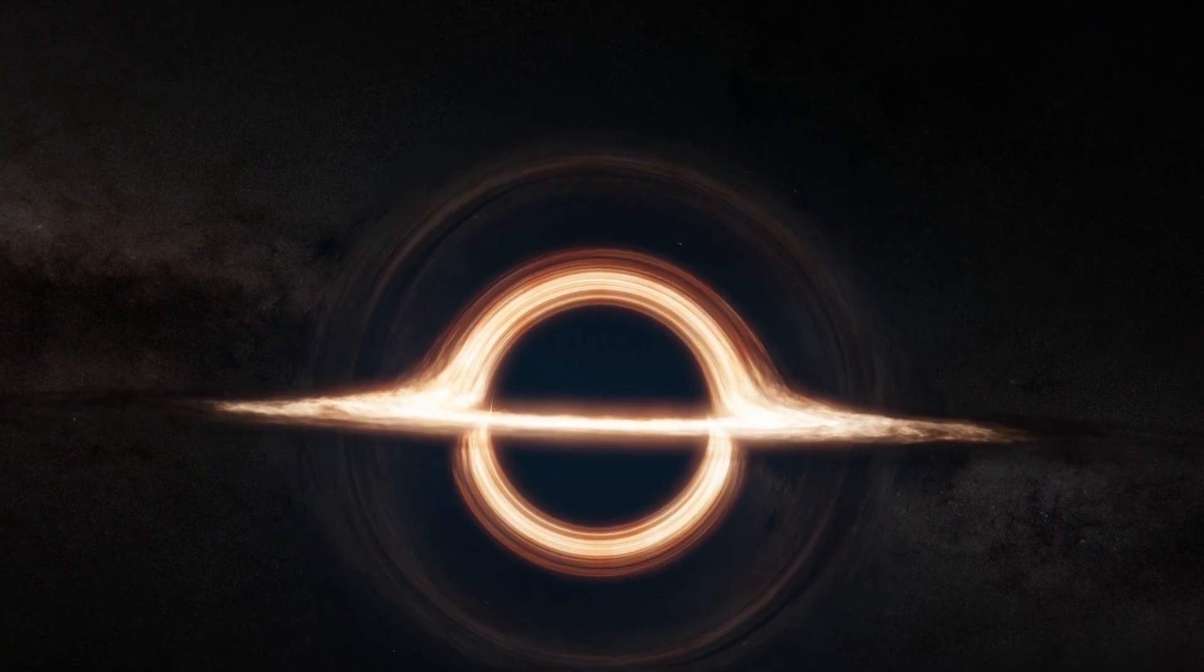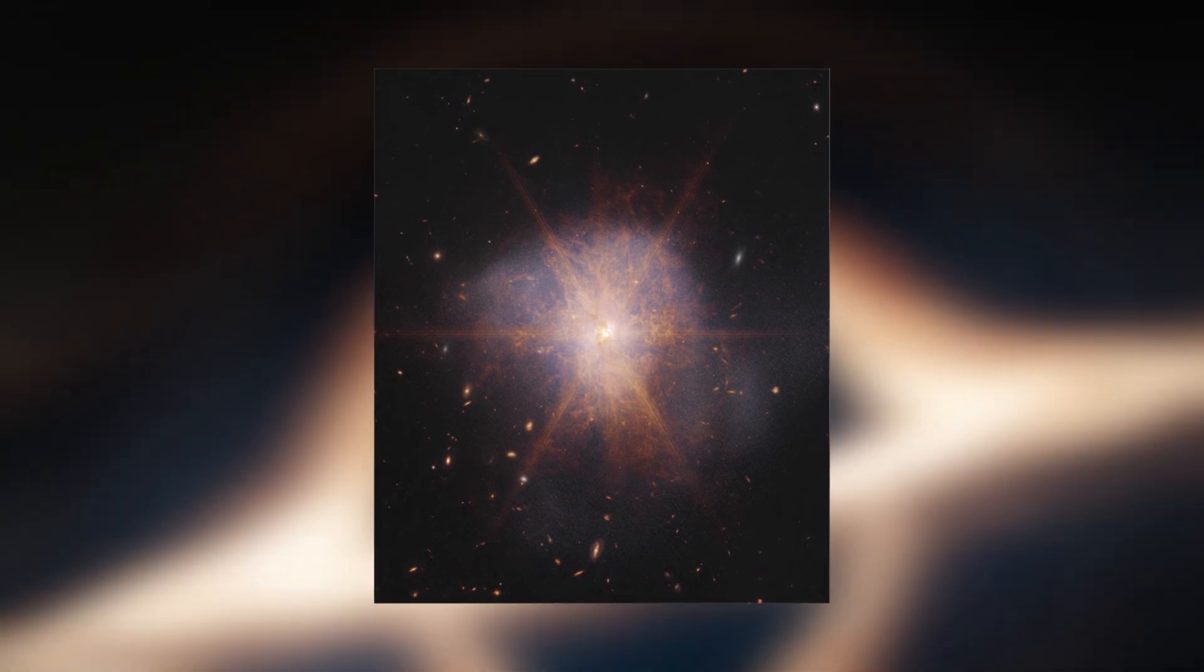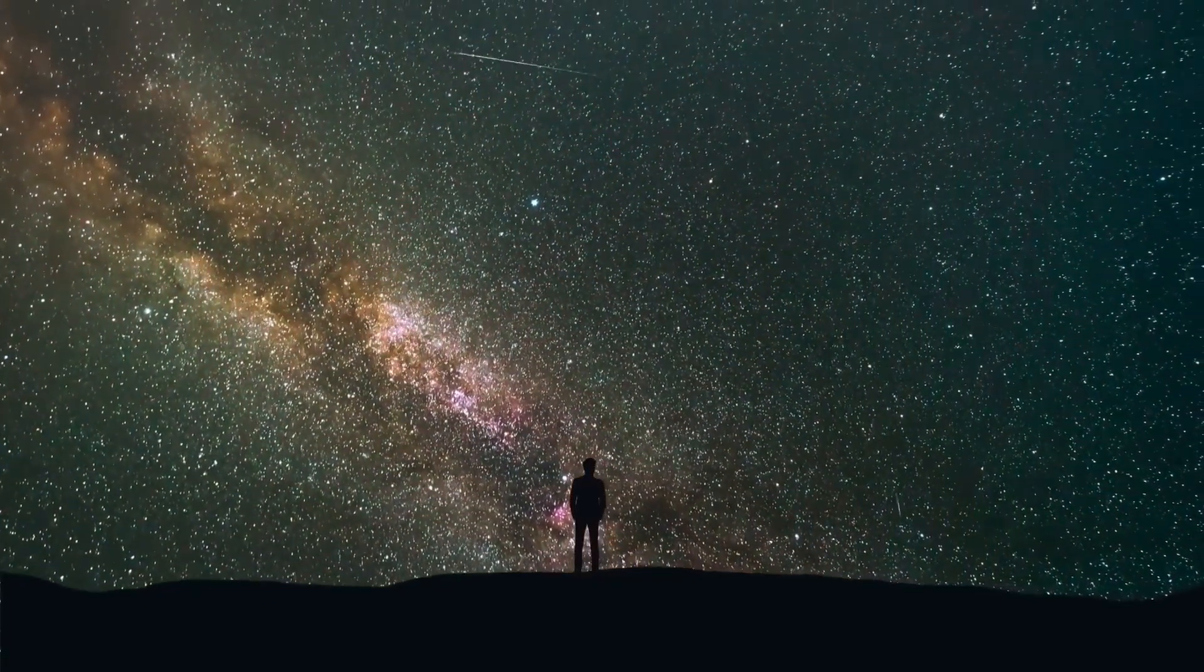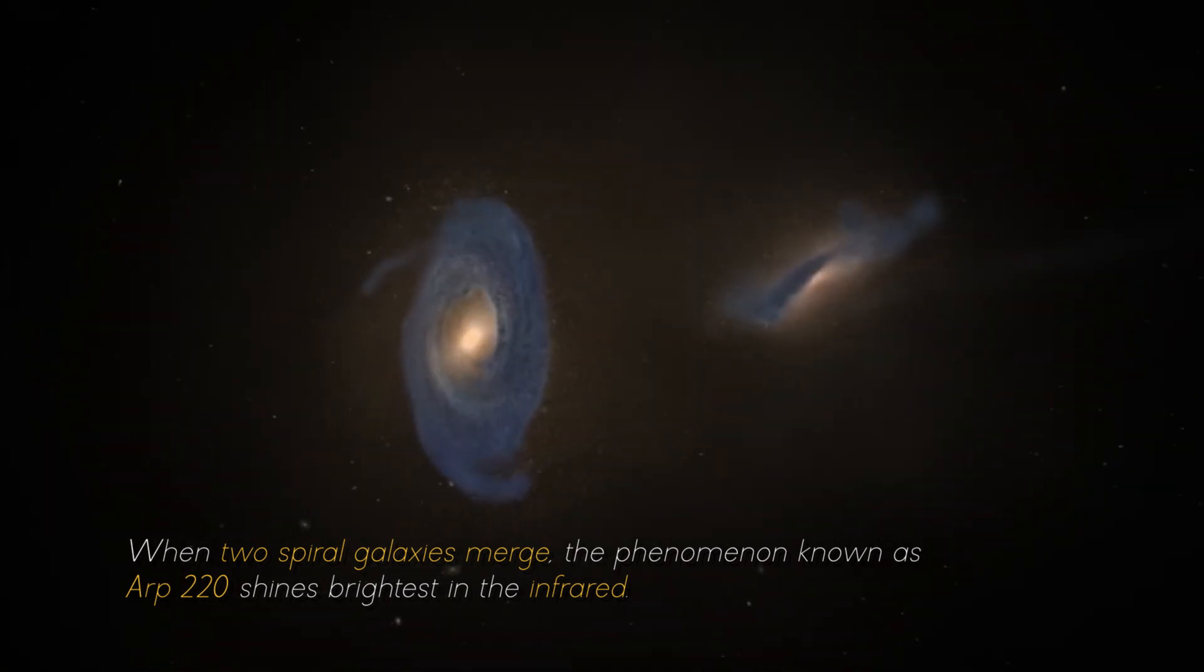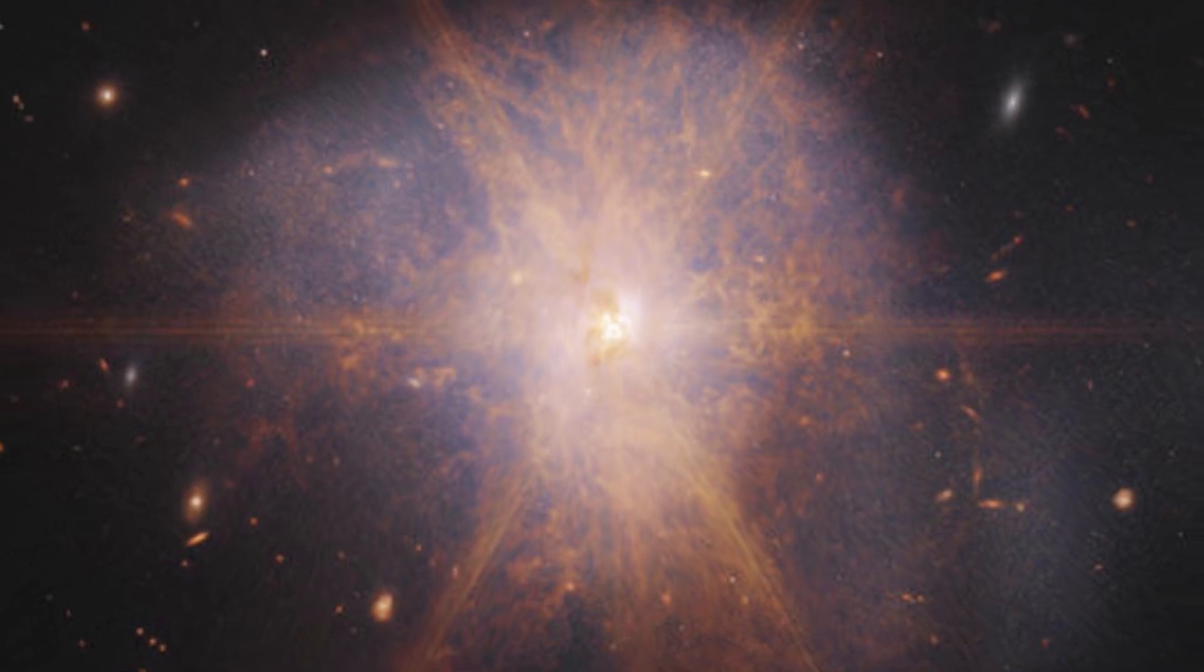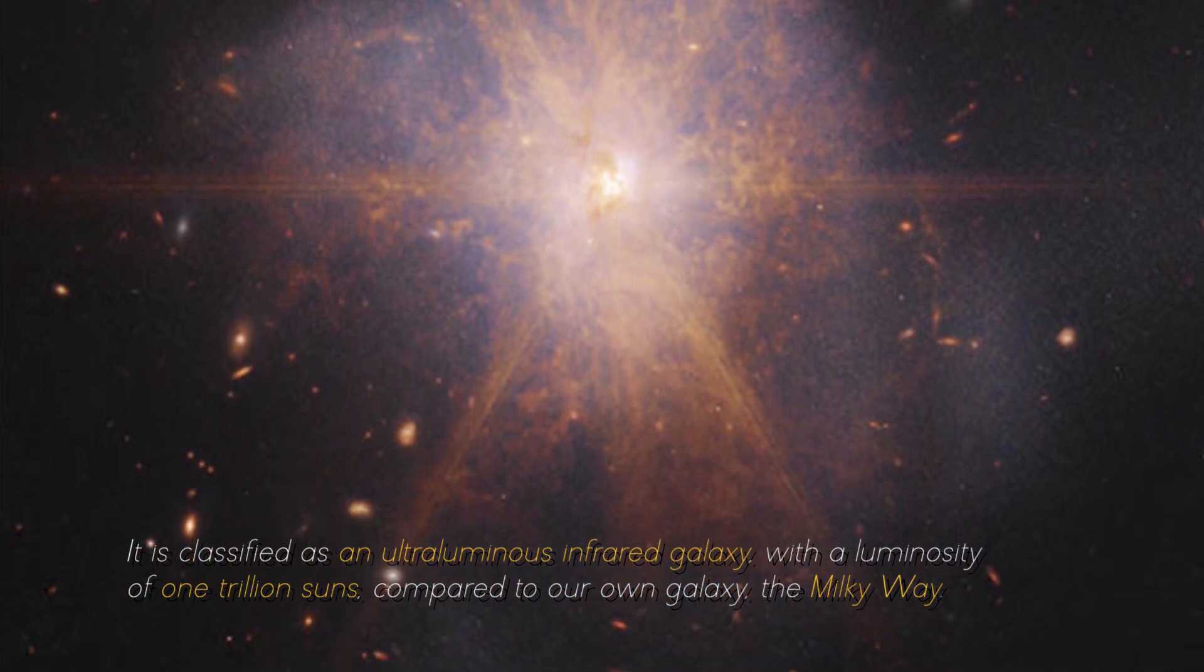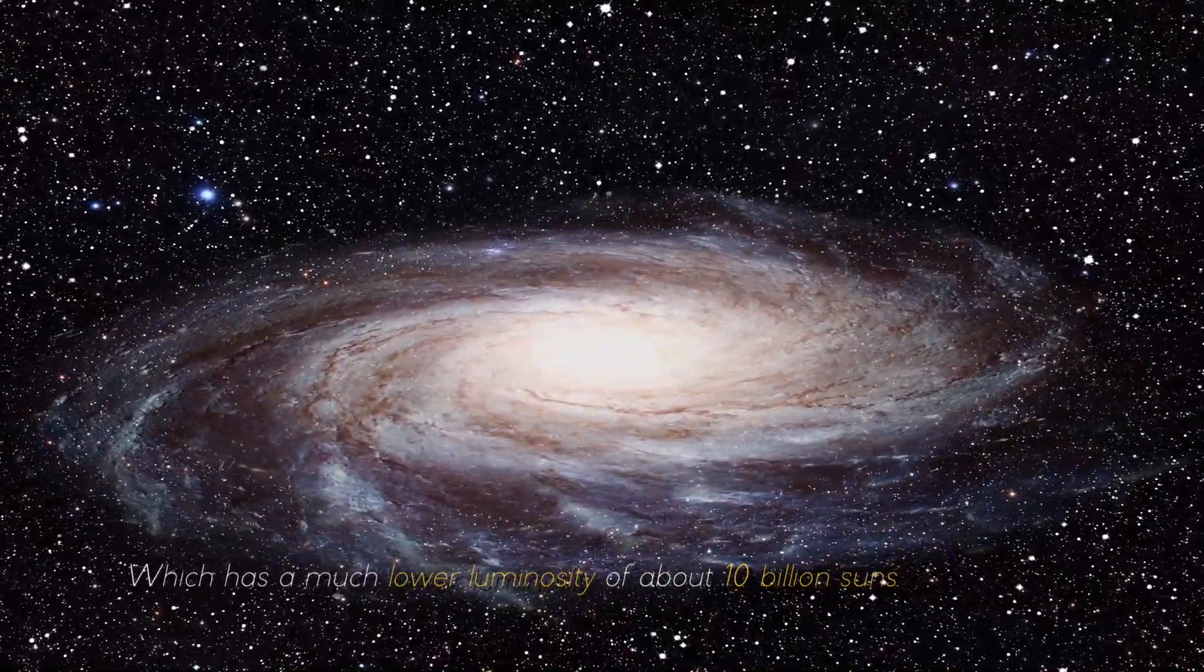NASA has made an exciting announcement about the galactic merger ARP 220, which was captured by the James Webb Space Telescope. This impressive galactic merger can be seen shining among other galaxies in the night sky. When two spiral galaxies merge, the phenomenon known as ARP 220 shines the brightest in the infrared, making it perfect for observation by the James Webb Space Telescope. It is classified as an ultra-luminous infrared galaxy, with a luminosity of 1 trillion suns compared to our own galaxy, the Milky Way, which has a much lower luminosity of about 10 billion suns.